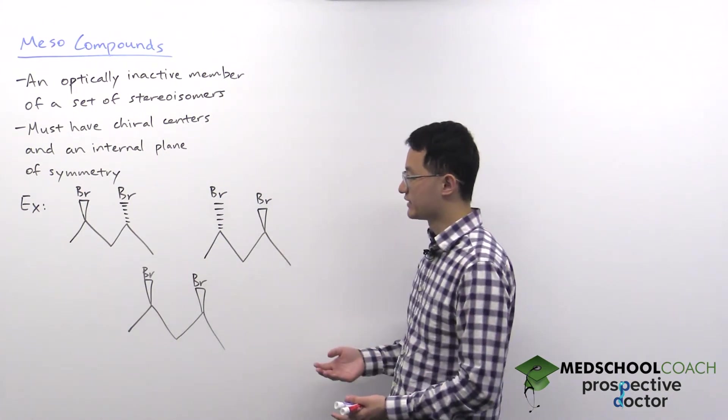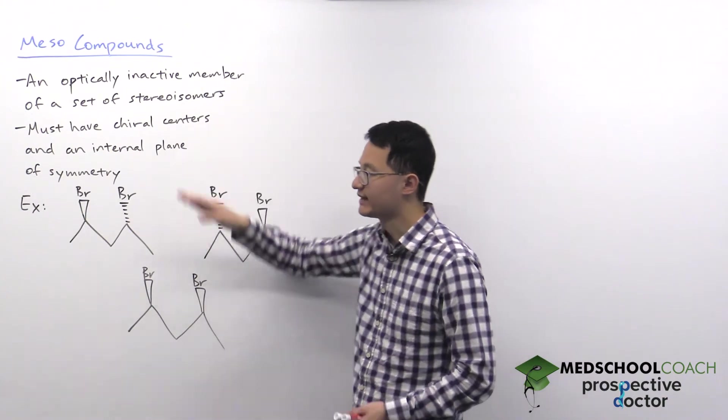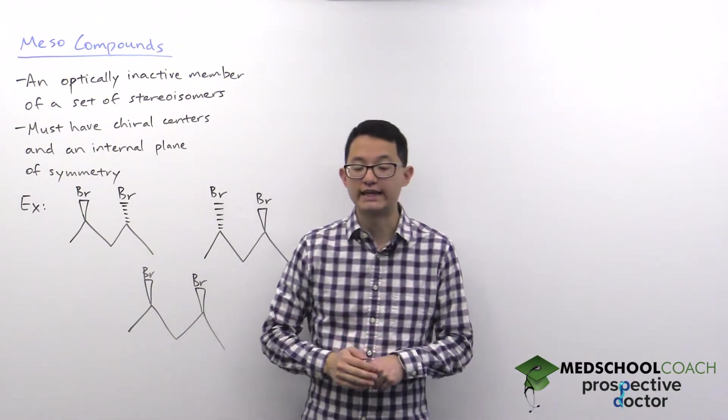And you can explain this when you consider the structure of meso compounds. They have to have chiral centers and they have to have an internal plane of symmetry.